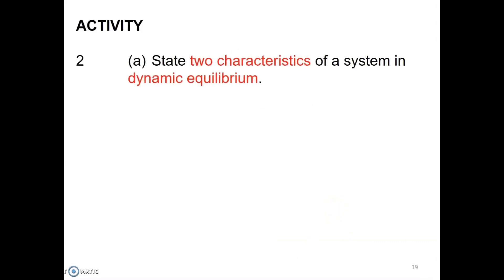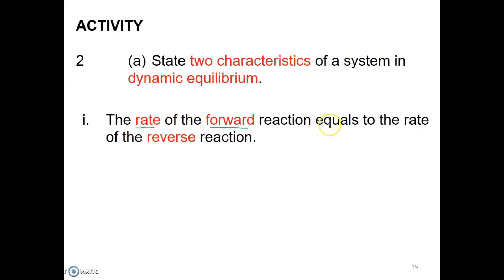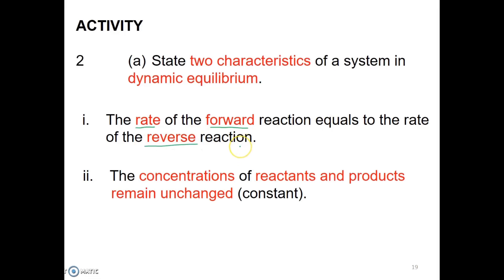Question number 2A, state two characteristics of a system in dynamic equilibrium. The two important characteristics of a system in equilibrium are: the rate of forward reaction must equal the rate of reverse reaction. Number two, at dynamic equilibrium, the concentrations of reactant and products remain unchanged or become constant. For this, you should get two marks.